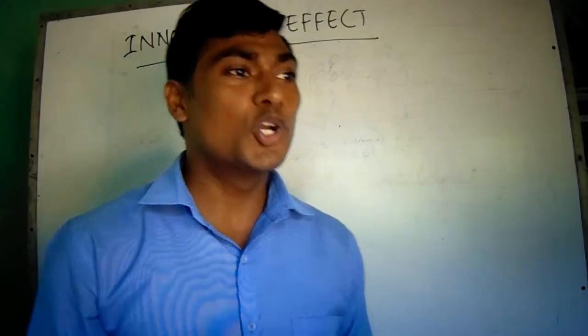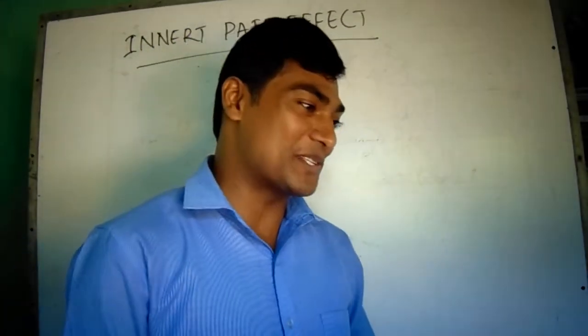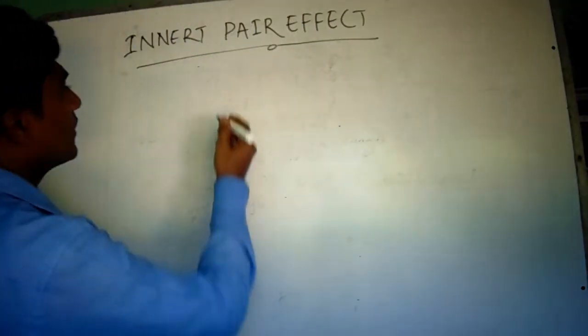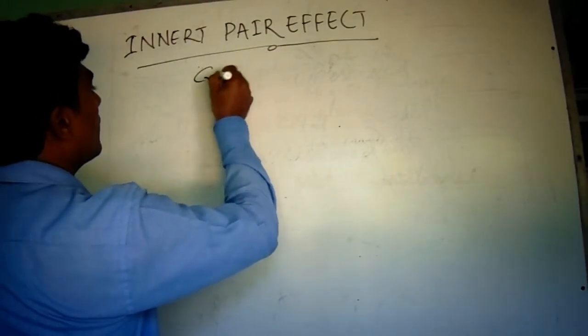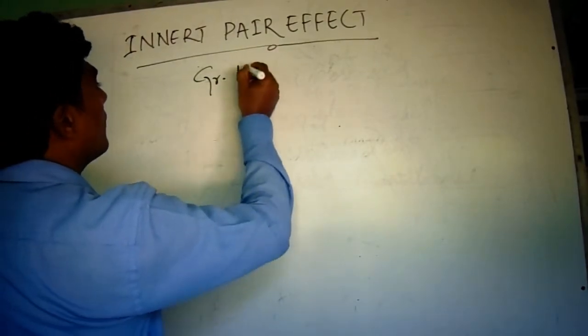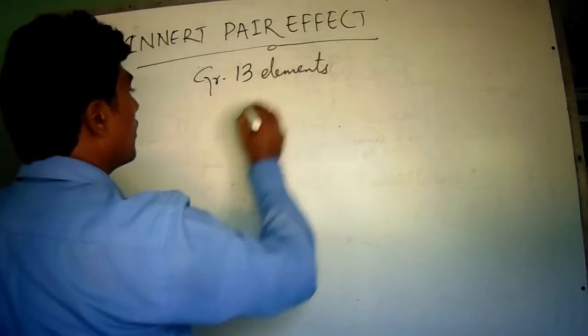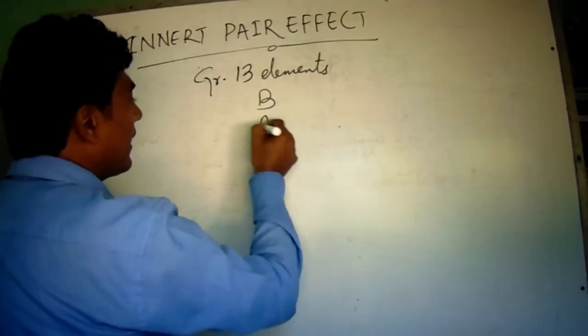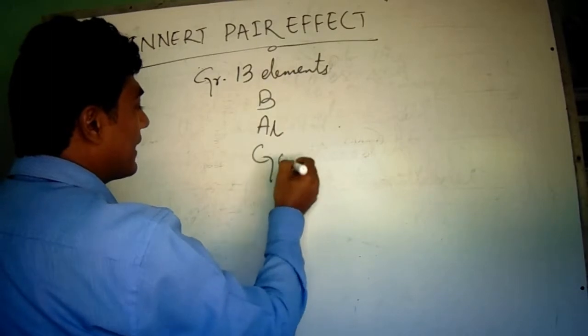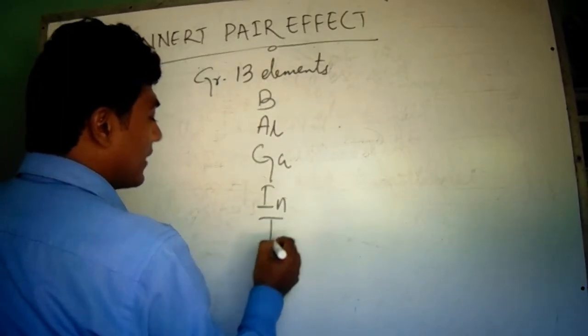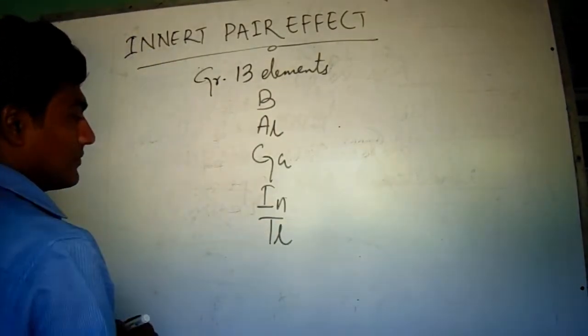Consider group 13 elements. They are boron, aluminium, gallium, indium, and thallium.